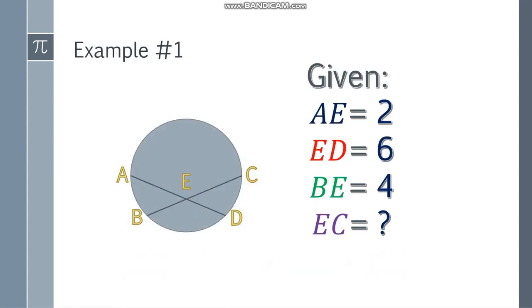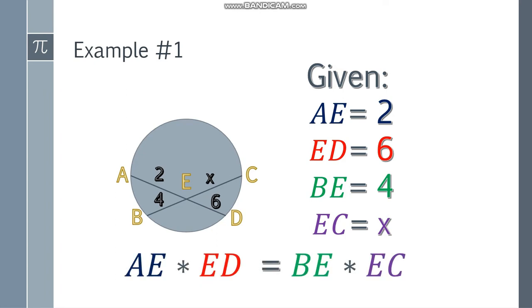Now let's have the first example. What if we have a given AE is 2, and ED is 6, this one 2 and 6, and BE is 4, and we are asked to find a value of EC. We don't know. So first things first, let's just put it as X and place the formula.